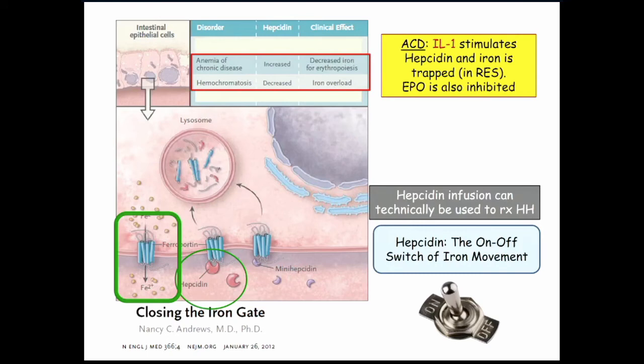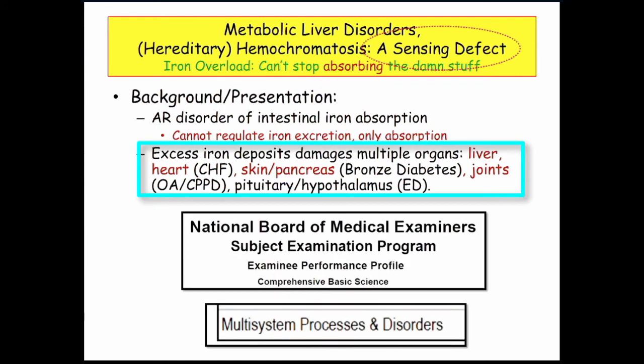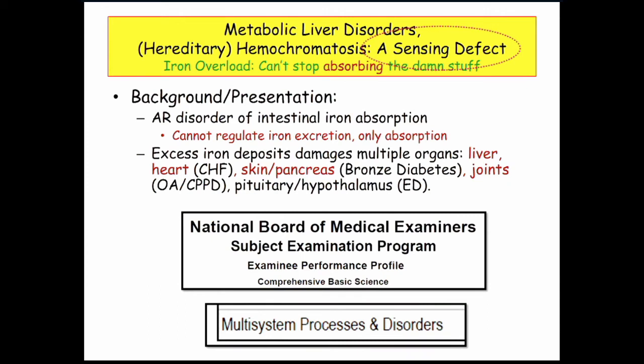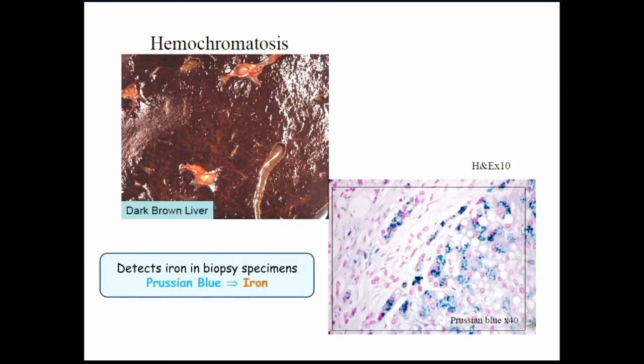Hepcidin regulates the movement of iron; the HFE defect has to do with absorption. Key points: can't regulate iron excretion, only absorption. Here are the organs involved. For diagnosis, it's all on the lab: high transferrin saturation (iron to TIBC), elevated ferritin since you're storing excess iron. The defect is on chromosome 6. Liver biopsy with Prussian blue staining for iron is diagnostic — whenever they give you Prussian blue, it's iron. Here's a dark liver and Prussian blue stain in a patient with hemochromatosis.